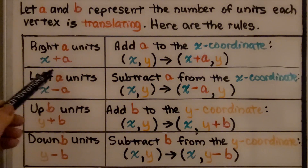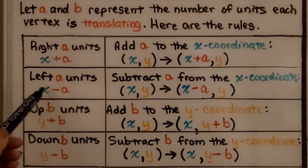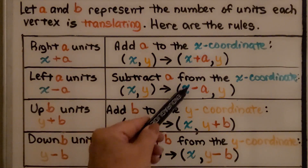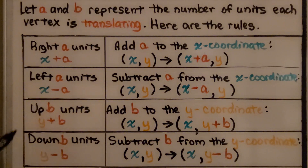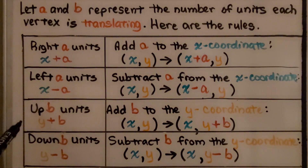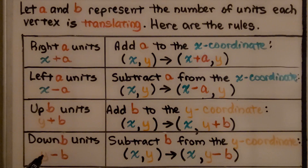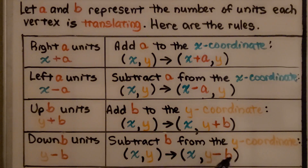If we're moving left some number a units, we would subtract a from x — we would have x minus a. If we were moving up some number b units, we would do y plus b, so we'd have x, then y plus b. If we're moving down some number b units, we would do y minus b — so we would have our x coordinate and then y minus b.